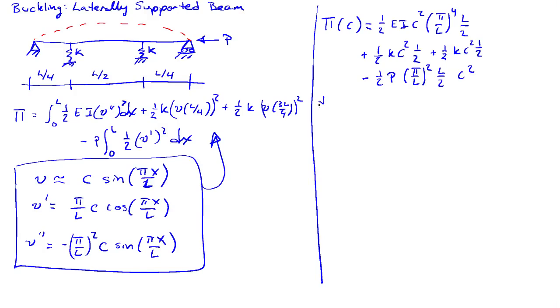The equilibrium equations come by taking the derivative of pi with respect to c, set equal to 0. I can factor out a c from all the terms times e i pi over l to the 4th times l over 2 plus k over 2 plus k over 2 minus p pi over l squared l over 2, and that's all equal to 0.